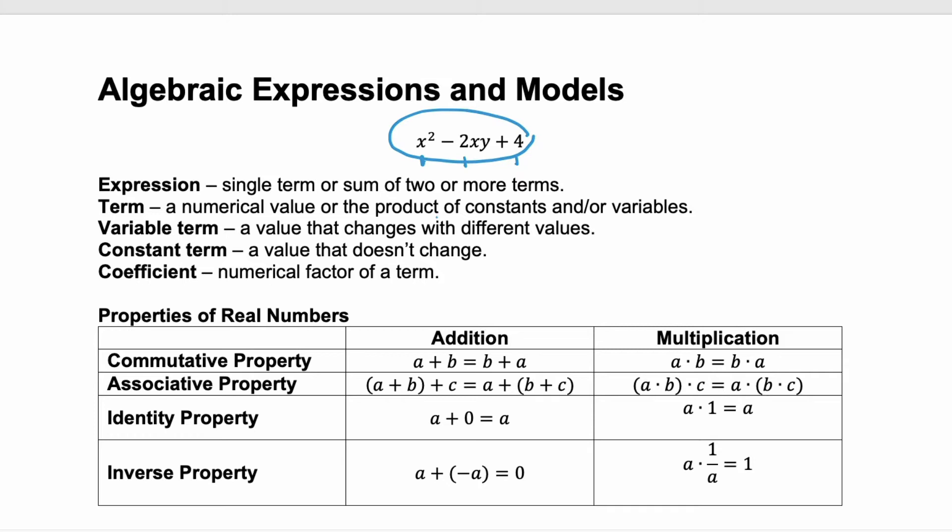Now the coefficient is the numerical factor of any term or it's the number part of the term. x squared technically has a 1 in front of it so the coefficient of the x squared term or that first term is 1 and the coefficient of our second term is negative 2.